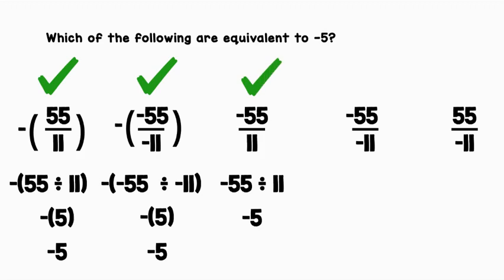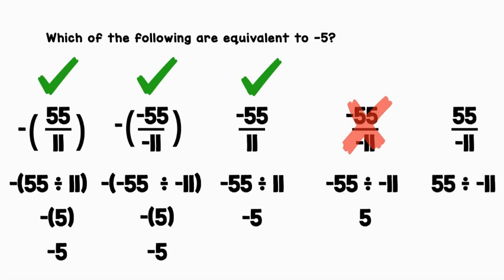Negative 55 over negative 11 can be rewritten as negative 55 divided by negative 11. A negative divided by a negative is a positive, so this equals positive 5 — we're going to cross that one out. 55 over negative 11 can be rewritten as 55 divided by negative 11. A positive divided by a negative is a negative, so our answer is negative 5, and we can give that a check as well.